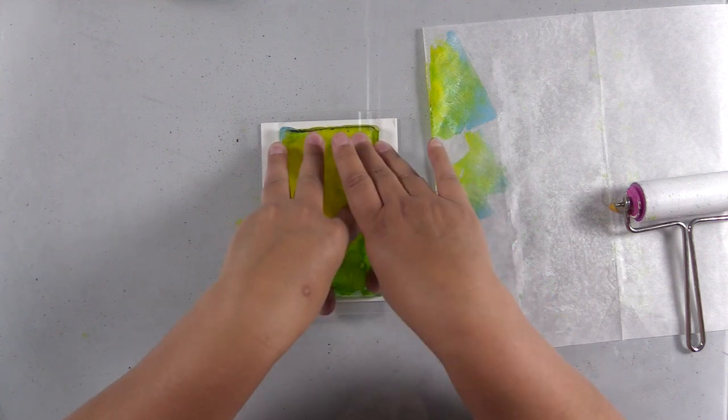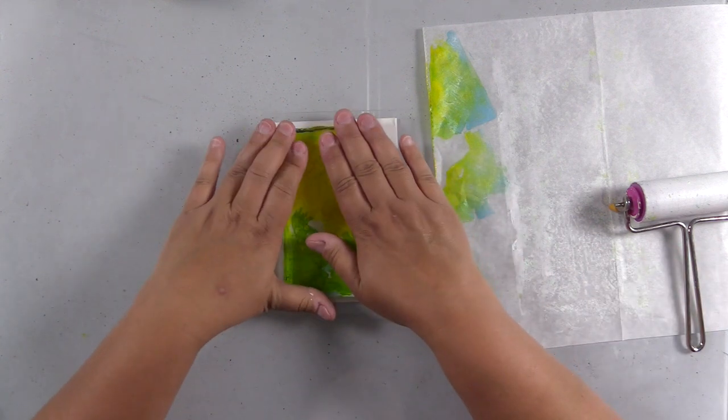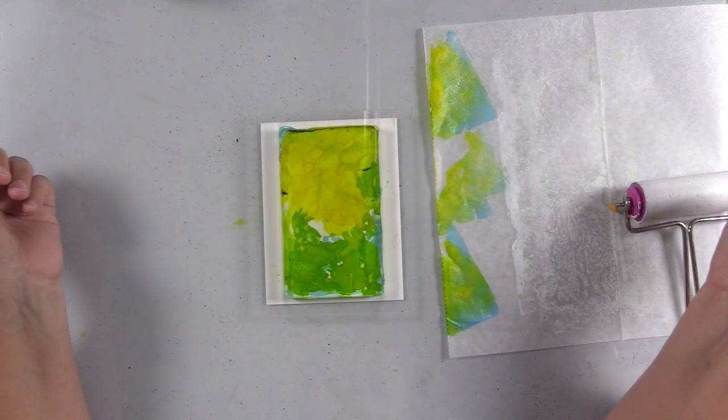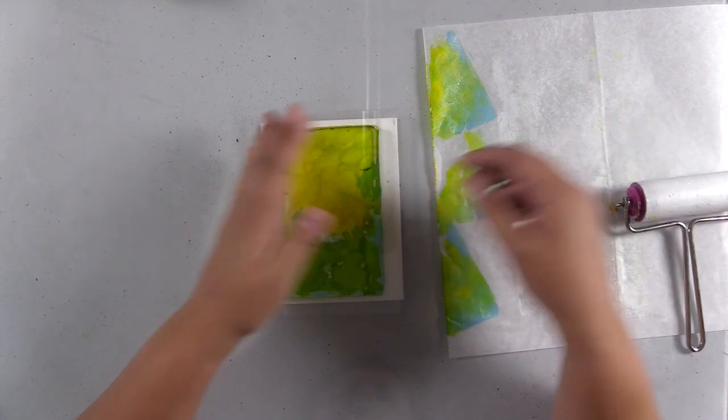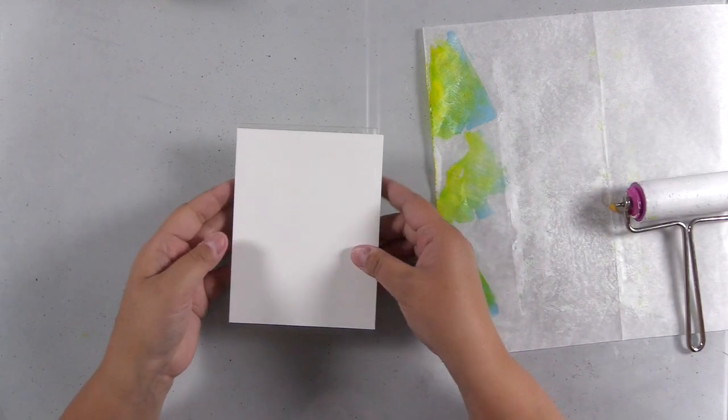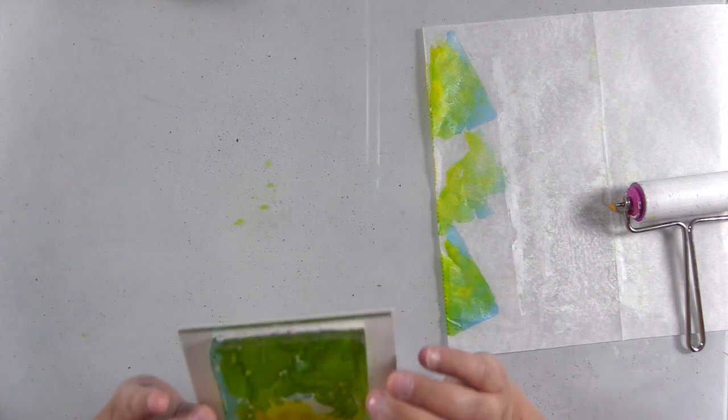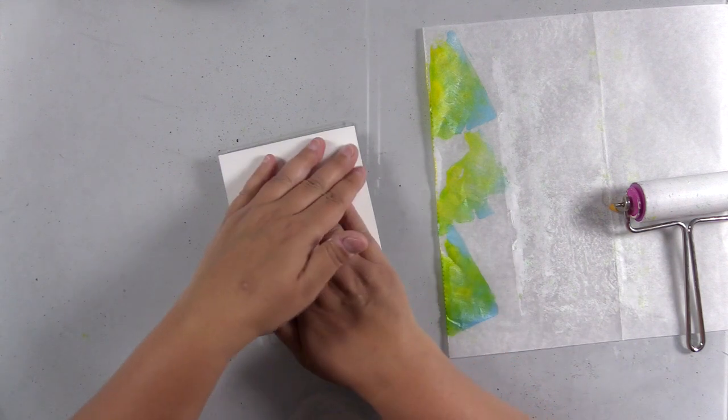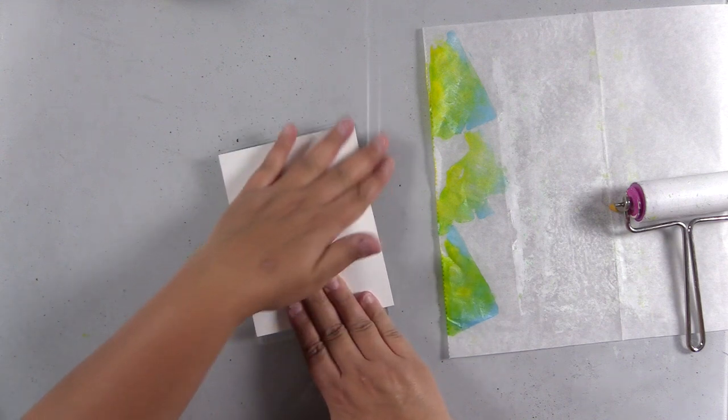You can see that I have my gel plate adhered to a stamp mount. This is a four by six stamp mount, and the gel plate is three by five, so it's a perfect fit. And it just helps me to pick it up and be able to use the gel plate like a stamp, which is how I prefer to use it.